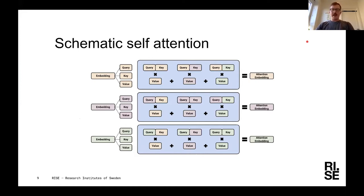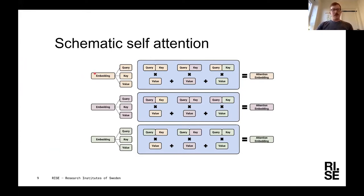Self-attention works as follows: we have gone from a sequence of characters to vectors in the rows of an embedding matrix. For each word — which is now a vector — you perform a linear transformation to produce a query vector, a key vector, and a value vector. You then calculate how much each word should focus on the other words. You do this by taking the query from one word and computing the dot product with the key from each other word. The dot product of two vectors produces a single scalar value — a weight representing how important that other word is.